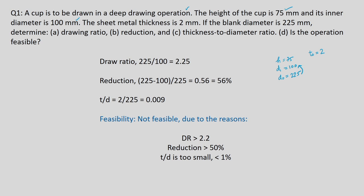Drawing ratio = 225/100 = 2.25. Reduction = (225 − 100)/225 ≈ 0.56, i.e., 56%. Thickness-to-diameter ratio T/D = 2/225 ≈ 0.009, which in percentage is less than 1%. The acceptable practical LDR is 2 to 2.2, so 2.25 exceeds that. Reduction should be ≤ 50%, but here it is 56%. T/D should be ≥ 1%, but here it is less. Therefore, this operation is not feasible.